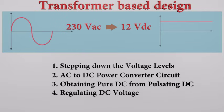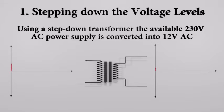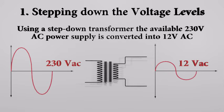First of all, using a step-down transformer, the available 230 VAC power supply should be converted into lower voltage. Only the magnitude of the voltage is changed. Next this low voltage should be converted to DC.